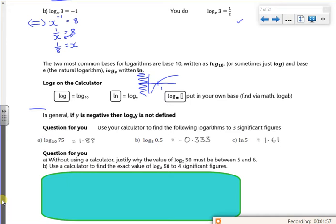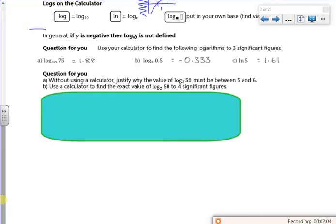So it says, without using the calculator, justify if log to base 2 of 50 is between 5 and 6. So we know that 2 to the power of 5 is 32, 2 to the power of 6 is 64, so it must be between here.